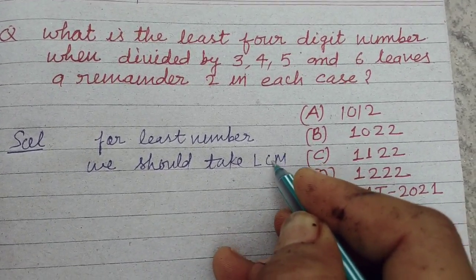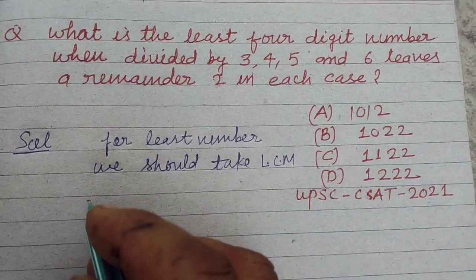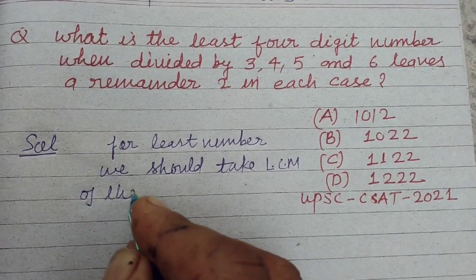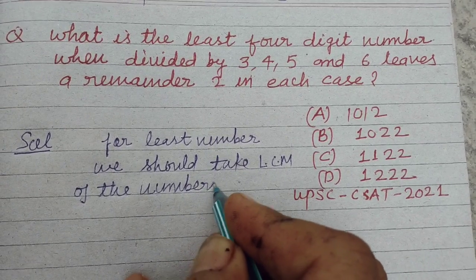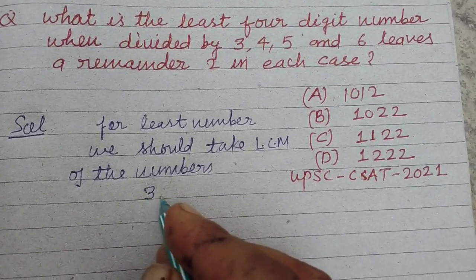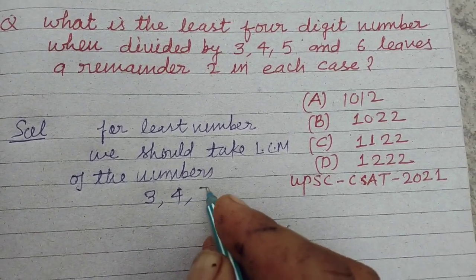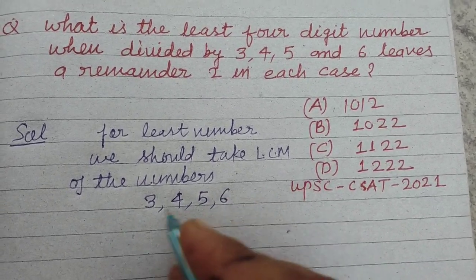LCM, that is also called lowest common multiple of the numbers. So we find LCM by division method of 3, 4, 5, and 6.